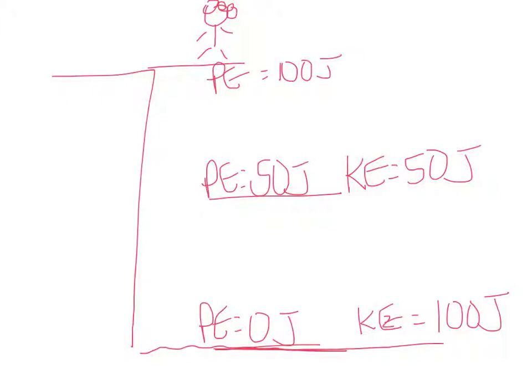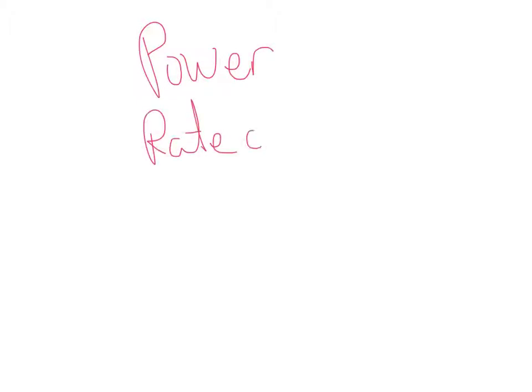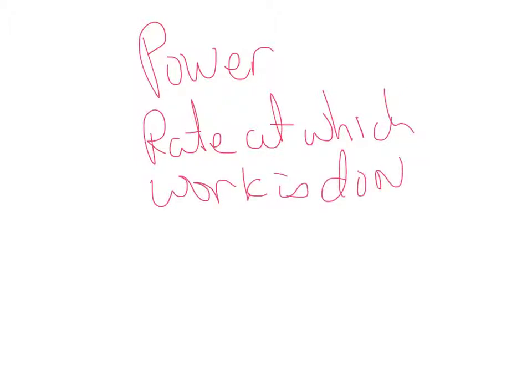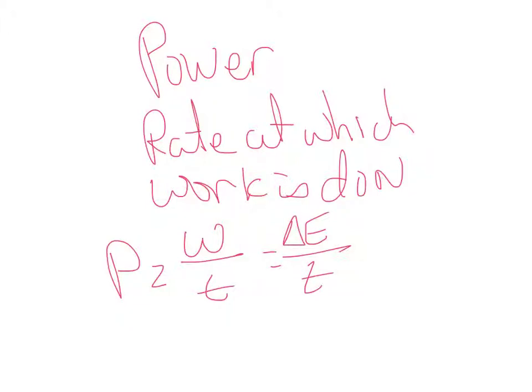The only thing left to cover is power — that's the rate at which work is done. Power equals work divided by time, which is also the change in energy over time. Its unit of measure is watts. That's pretty much the quick overview of chapter 6.